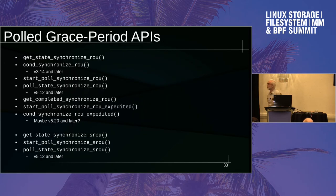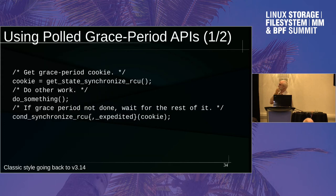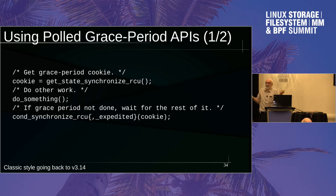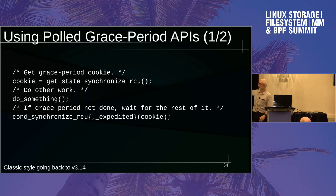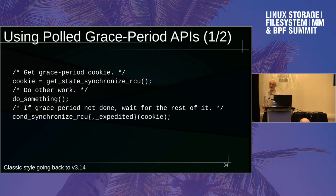Polled grace period APIs have been around a long time. get_state_synchronize_rcu and cond_synchronize_rcu have been around since 3.14. The idea: call get_state_synchronize_rcu, it hands you back a cookie (an unsigned long). Later, pass the cookie to cond_synchronize_rcu — if the grace period has expired, it does the necessary memory barriers and returns; otherwise it invokes synchronize_rcu, guaranteeing the grace period has elapsed when it returns. That works nicely, except sometimes you can't sleep — which is why more recent non-sleeping interfaces were added.